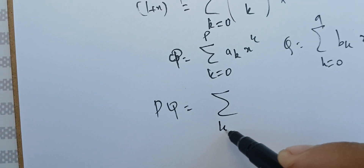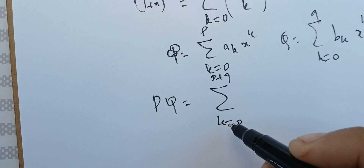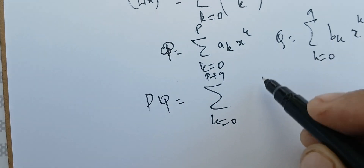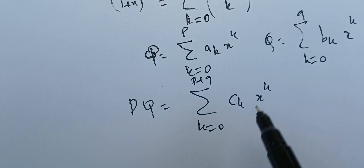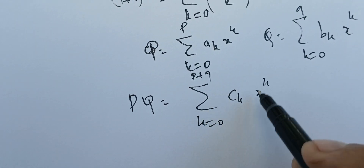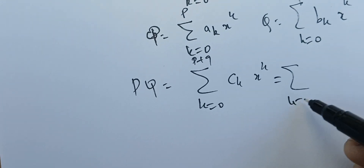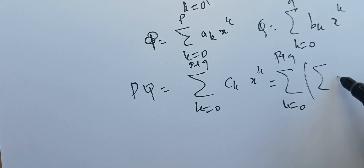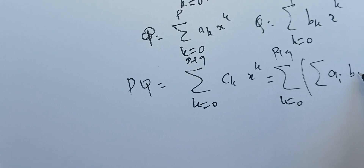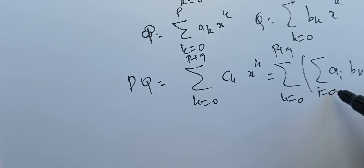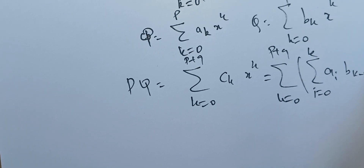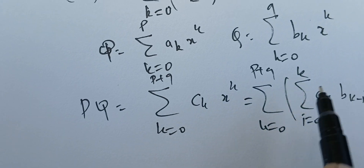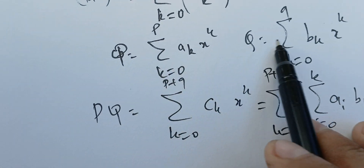The product of these two polynomials is the sum from k=0 to p+q of c_k x^k, where c_k is given by the sum of a_i · b_{k−i} for i from 0 to k. You can prove this result, or you can just do the multiplication and notice what you get when you compute P times Q.